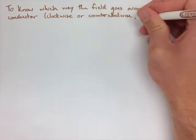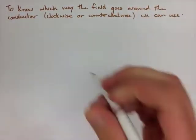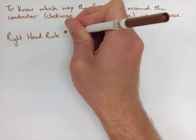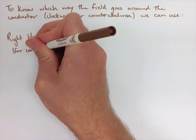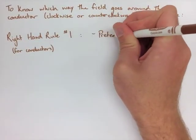So this is actually known as the right-hand rule for conductors, or in our case, right-hand rule number one. What you're going to do for right-hand rule number one, you're going to pretend to grab the wire that we're looking at.